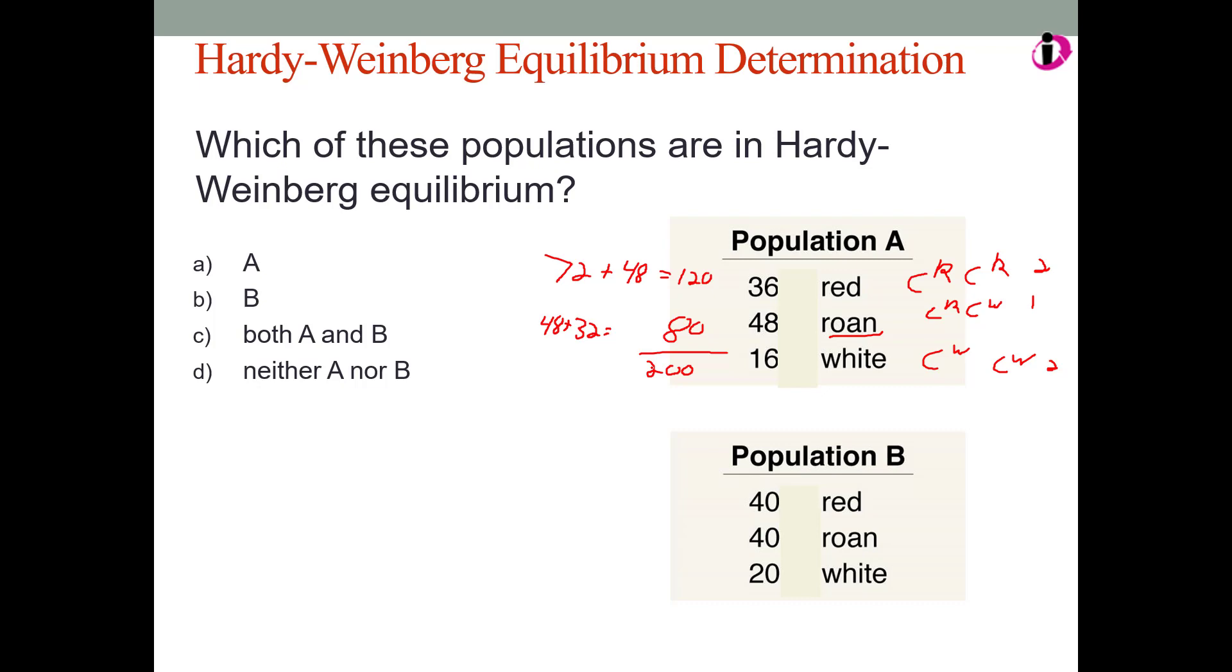That is how many we have in the population. We now need to turn these into proportions. So, 120 over 200 is 0.6. The red allele, or P, if we use the nomenclature of Hardy-Weinberg, is found 60% of the time. And Q, or the white allele, is found 40% of the time in this population. That is what we have. Now what we want to do, we know the proportion of white alleles to red alleles. We now run these proportions through the Hardy-Weinberg equilibrium.